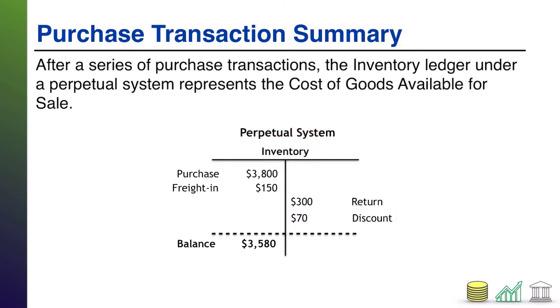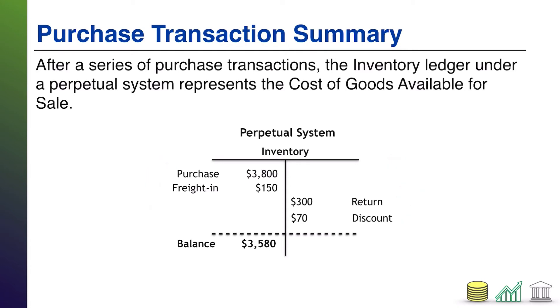Ultimately, when you are done with this, the combination of the purchase price, any freight and insurance, less any returns or discounts — that's what's known as net purchases.